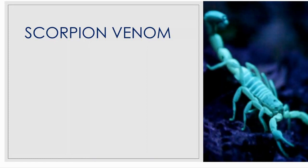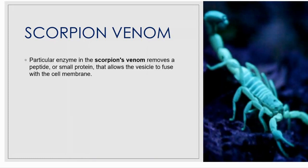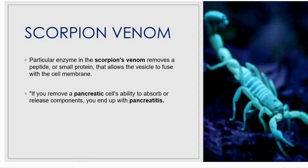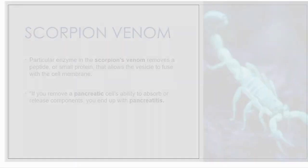Scorpion venom is a really interesting cause. A particular enzyme in the scorpion's venom removes a peptide, or small protein, that allows vesicles to fuse with the cell membrane. If you remove a pancreatic cell's ability to absorb or release components, you end up with pancreatitis.